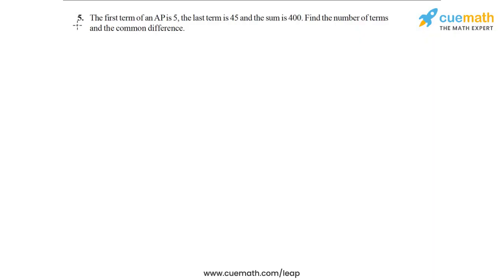Okay, so here's the problem statement of question number 5 of this exercise. The first term of an AP is 5. So let's actually write this information as we read out the statement. So A is equal to 5.